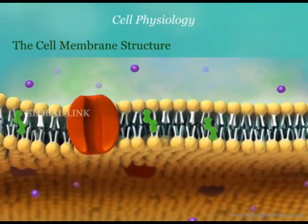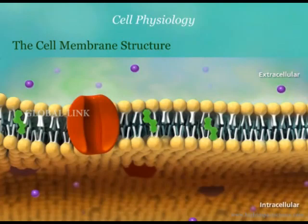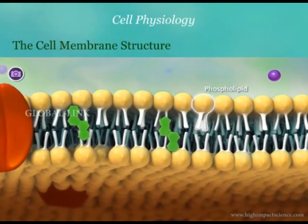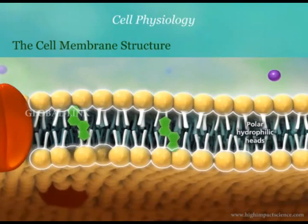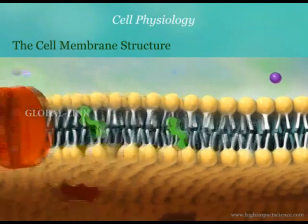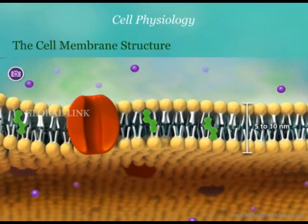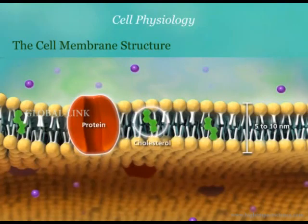Previously, we said that the plasma membrane surrounds the cell and separates the interior of the cell from its environment. This membrane is composed of a bilayer made up of phospholipids. The structure of the bilayer is due to tail-to-tail packing of the non-polar hydrophobic tails and the polar hydrophilic heads of the phospholipid molecules. The membrane is 5 to 10 nanometers thick and is embedded with proteins. Some membranes also contain cholesterol.